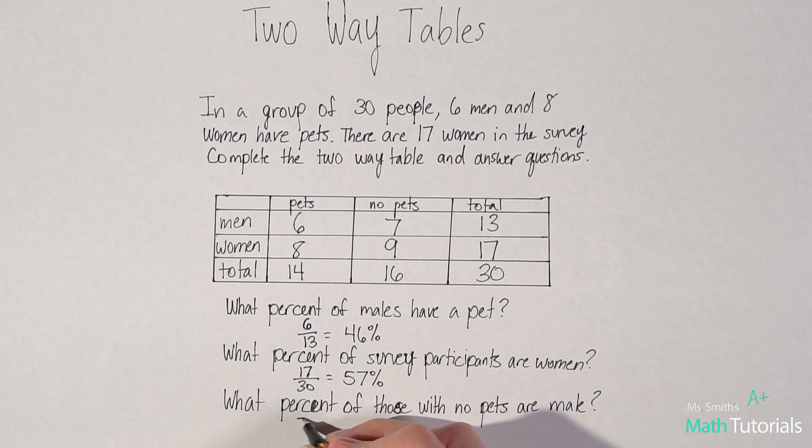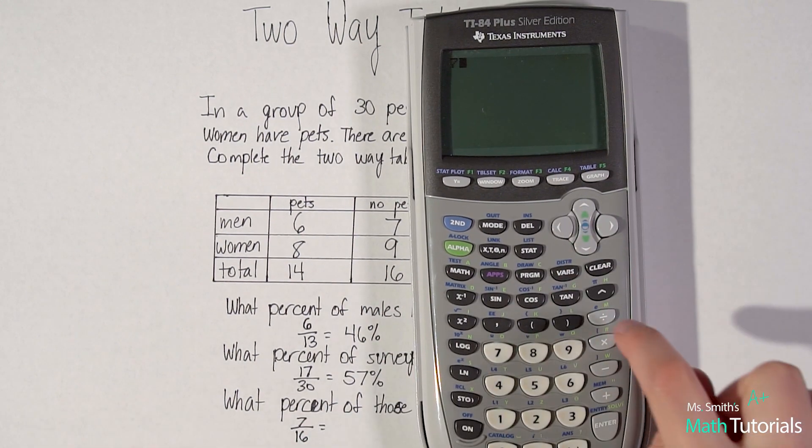So that would be seven males who don't own pets out of 16 total people who don't have pets. So we would do seven divided by 16.